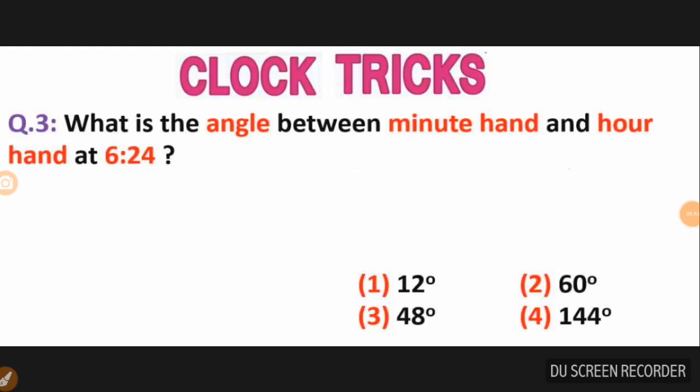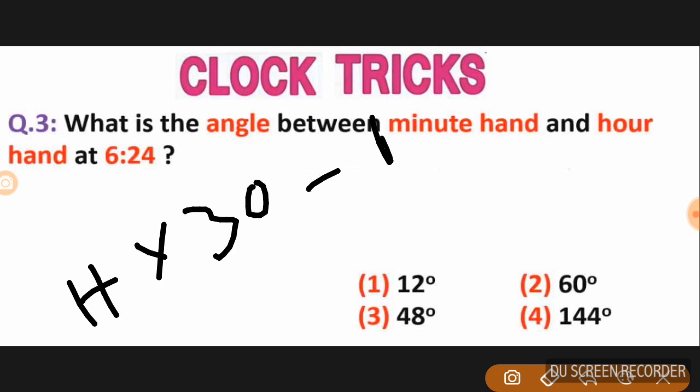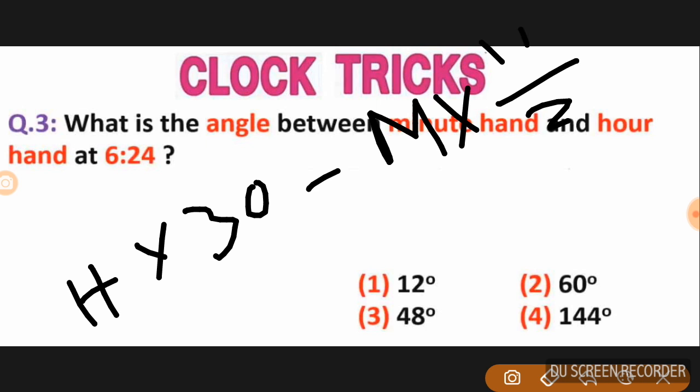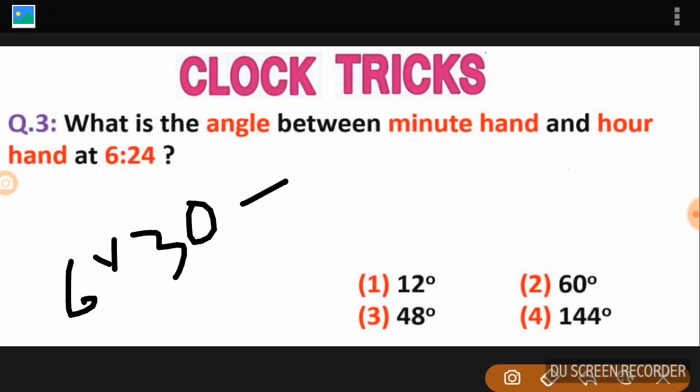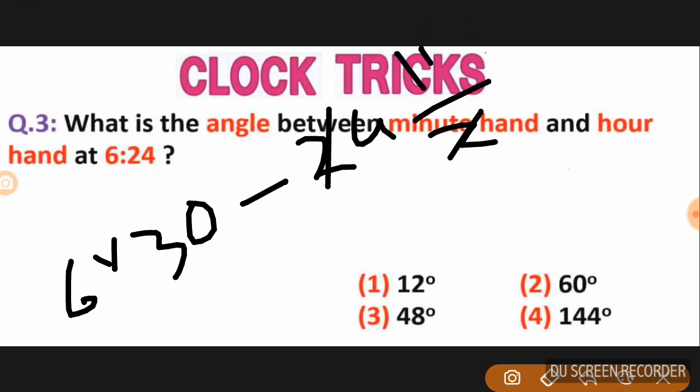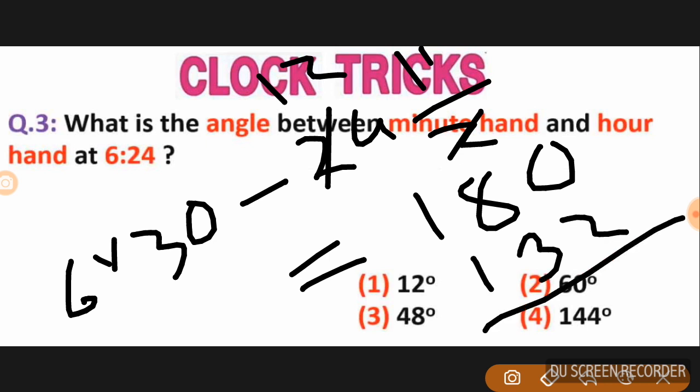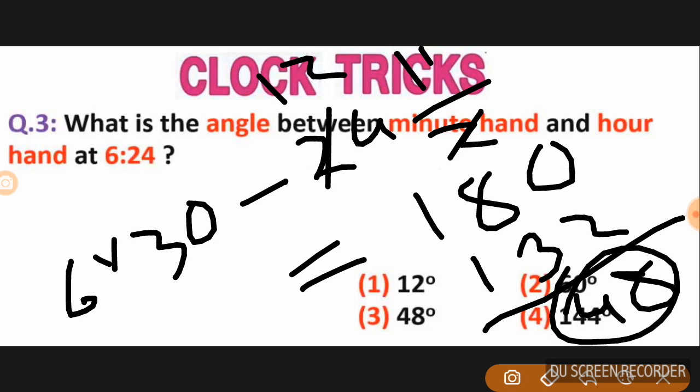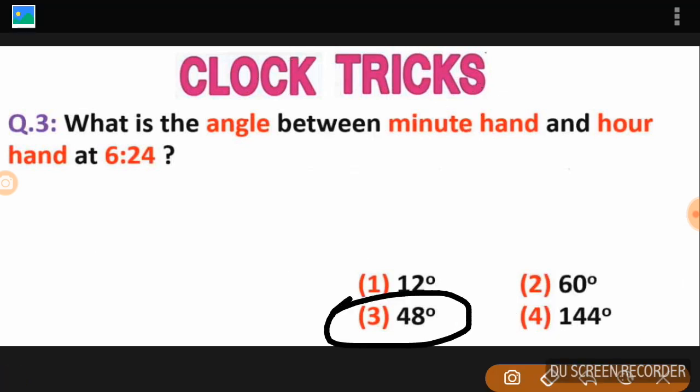Calculating the angle for this clock position: hour into 30 minus minute into 0.5. When we calculate, if the result is zero or close to zero, that indicates the hands are coinciding or nearly coinciding at that position.